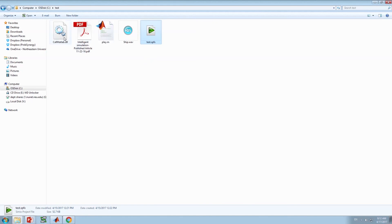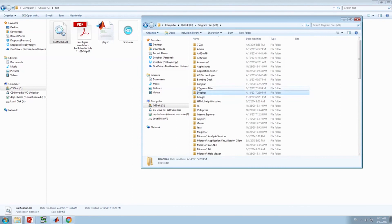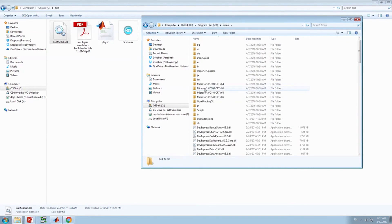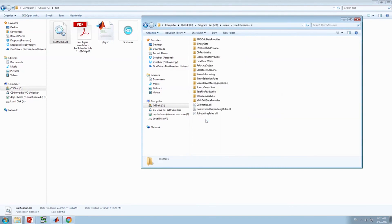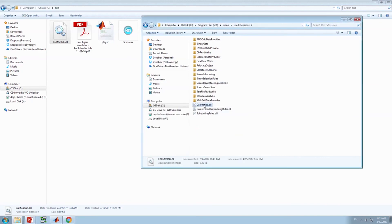First of all, you have to copy call matlab.dll to Simio directory. Let's navigate through Simio directory. Go to C, Program Files, then Simio, and finally, click on User Extensions folder, and then paste call matlab.dll file in here. That's it. Make sure that Simio is closed when you are copying.